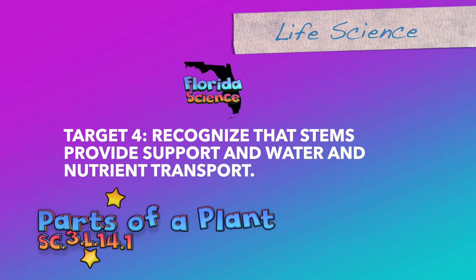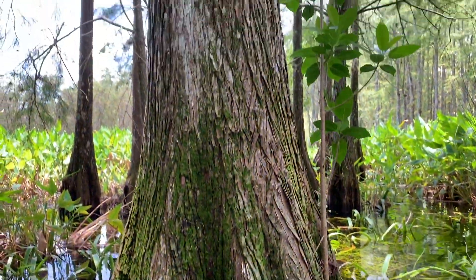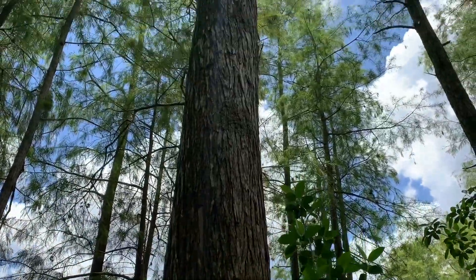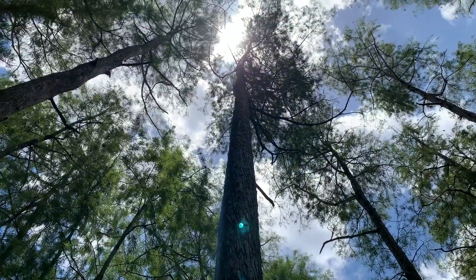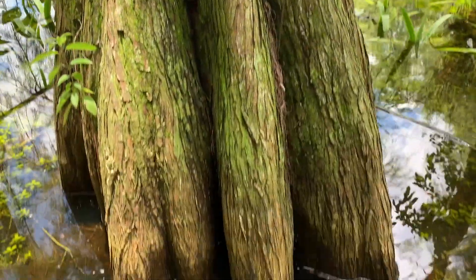Target 4. Recognize that stems provide support and water and nutrient transport. The stem of a plant connects the whole plant together. The stem is connected to the roots at the bottom of the plant and grows up out of the ground. When seeds begin to grow, the roots grow down in response to the pull of gravity and the stem grows up in response to the light of the sun. As stems split, we usually call them branches. Branches are still stems and still do the same job. The branches of this cypress tree split off and hold up the tree's needles and cones.